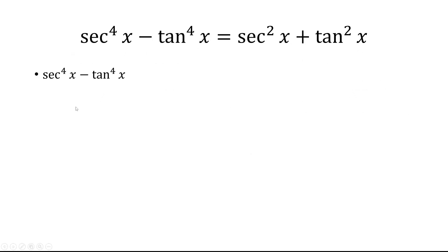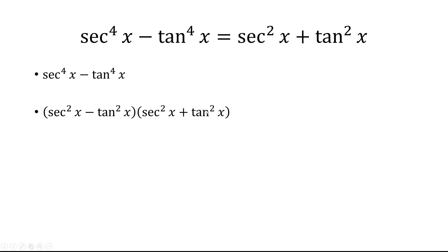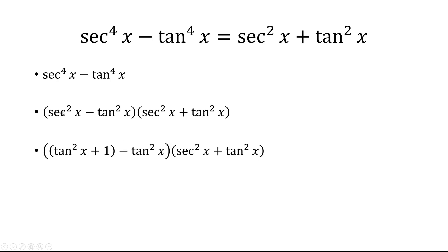So let's start on the left side. We can factor this into secant squared minus tangent squared times secant squared plus tangent squared. And then secant squared is equal to tangent squared plus 1.